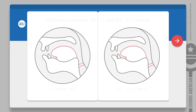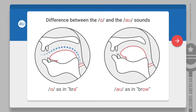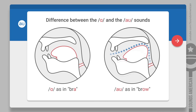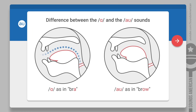Now, watch and compare what happens when you pronounce these vowels. Do you see a difference in how your tongue and jaw move? When you pronounce the sound, your tongue and jaw move into one position only, so you pronounce just one sound. That's why it is called a monothong, which means a single sound.